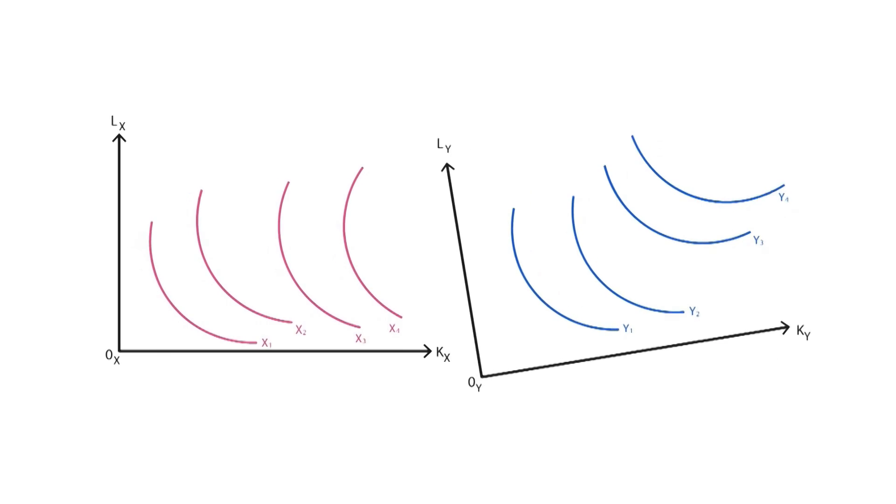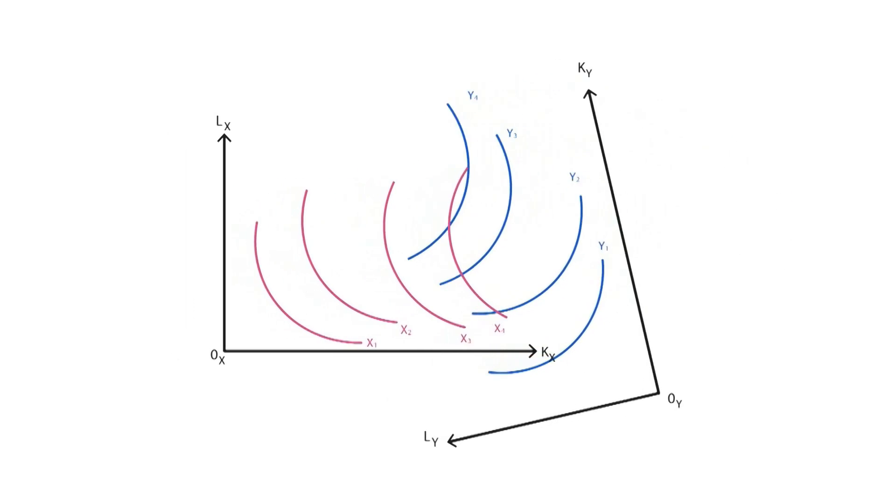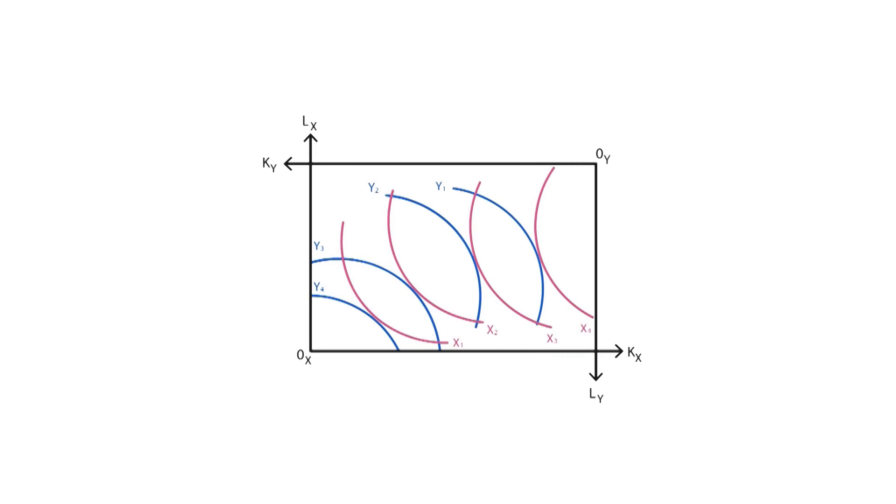These two diagrams can be plotted together using what is known as the Edgeworth box, which makes it easier to compare quantities of capital and labor used, while also comparing quantities of good x and y being produced. Indeed, it's not only easier to analyze, but also makes more sense, since the total available quantities of capital and labor are given.